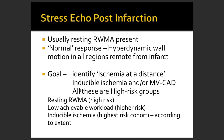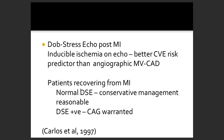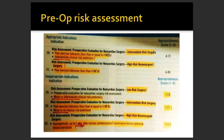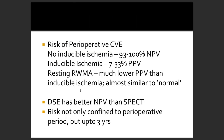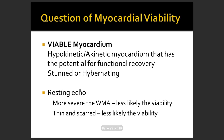Adding contrast perfusion echo to dobutamine stress echo increases its prognostic value significantly. For patients who have had a heart attack with resting regional wall motion abnormality, dobutamine stress echo can be done post-MI to identify induced ischemia at a distance and predict cardiovascular events even better than angiographic values — as demonstrated in a paper by Carlos et al. It can also be used for pre-operative risk assessment in patients undergoing procedures like knee replacement surgery.